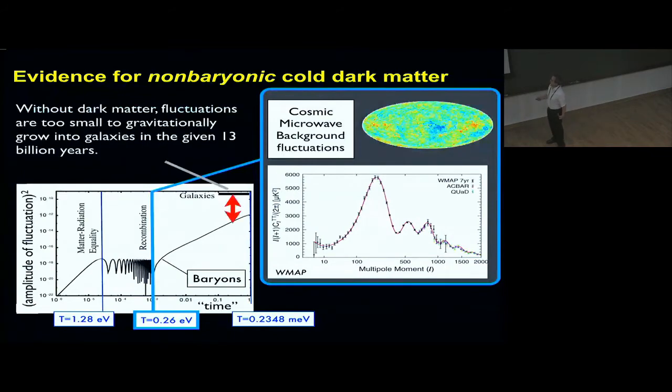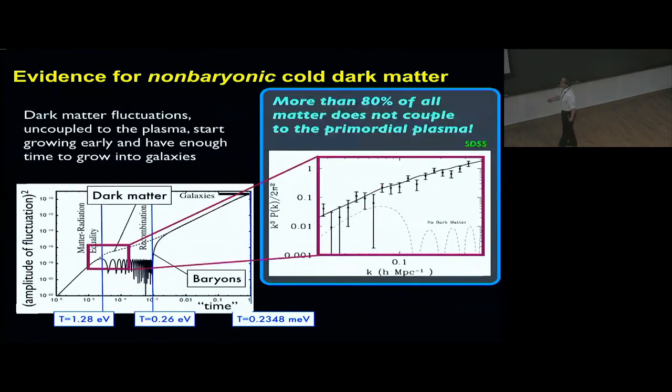But including dark matter lets gravity start forming structure at an earlier time, which is the matter-radiation equality. Dark matter, which is not participating in plasma oscillations, has the time to form gravitational structures before the plasma decouples from the photons. This gains enough time to form the galaxies.